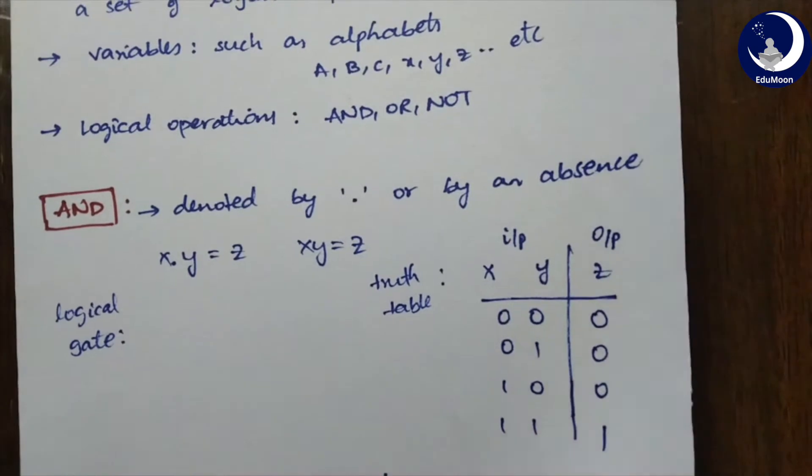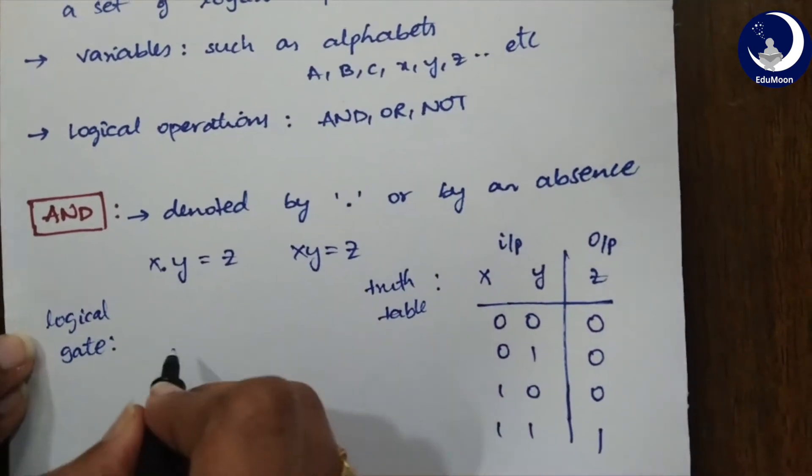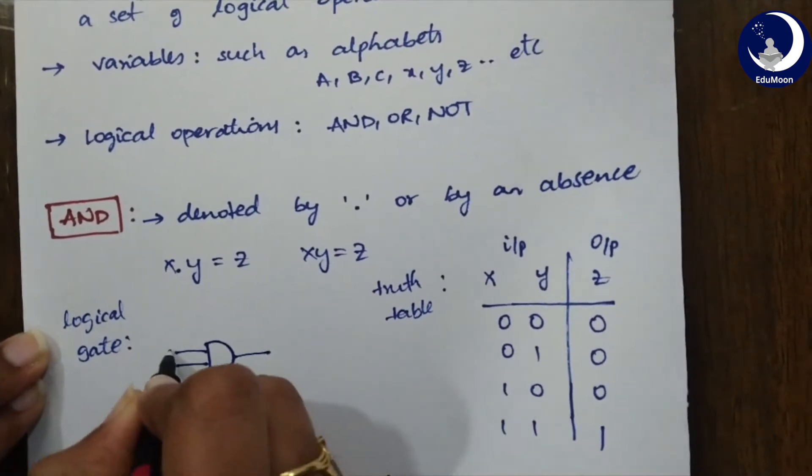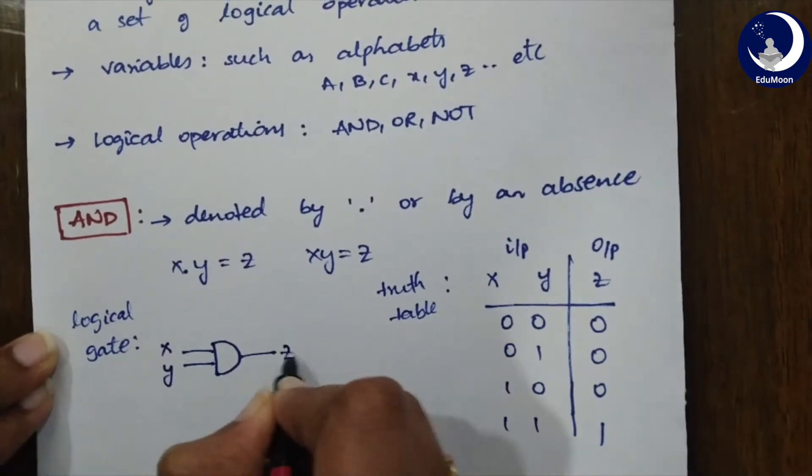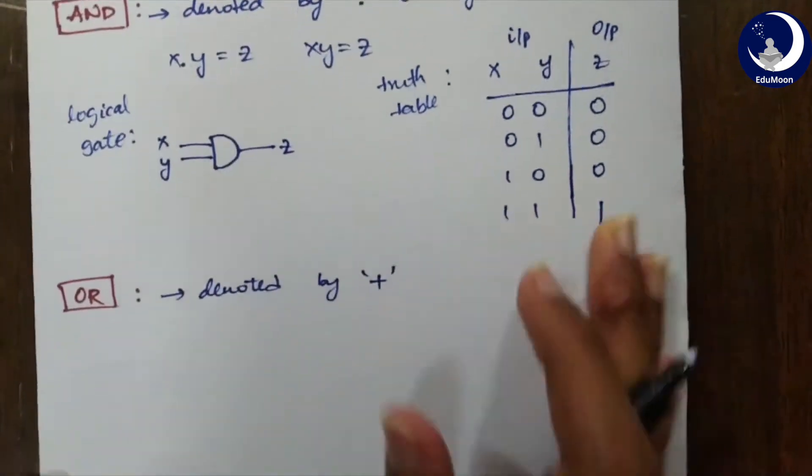Now, how do we represent the logical gate for this one? The logical gate for AND can be given like this one. Here, these two are input signals and this is your output terminal. X and Y is your input and Z will be your output. This is the basic AND definition I could give you. Now, let's jump into OR.